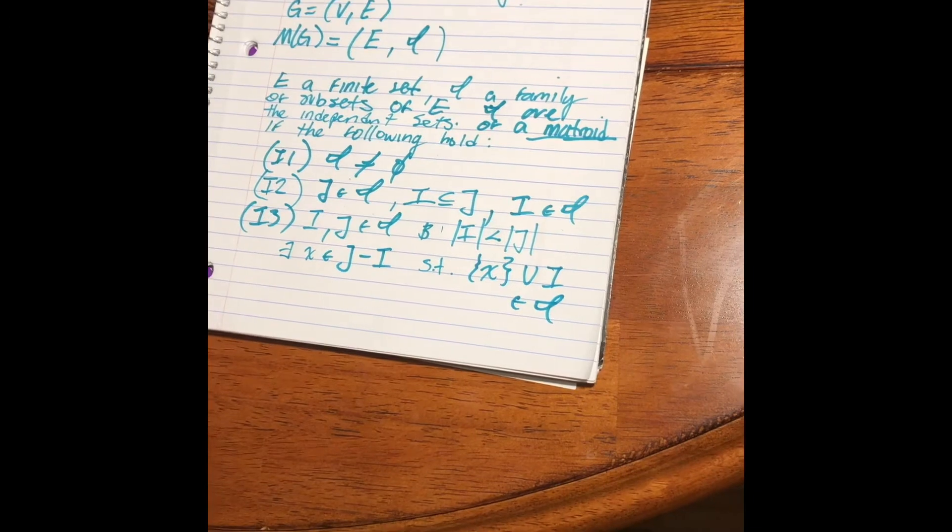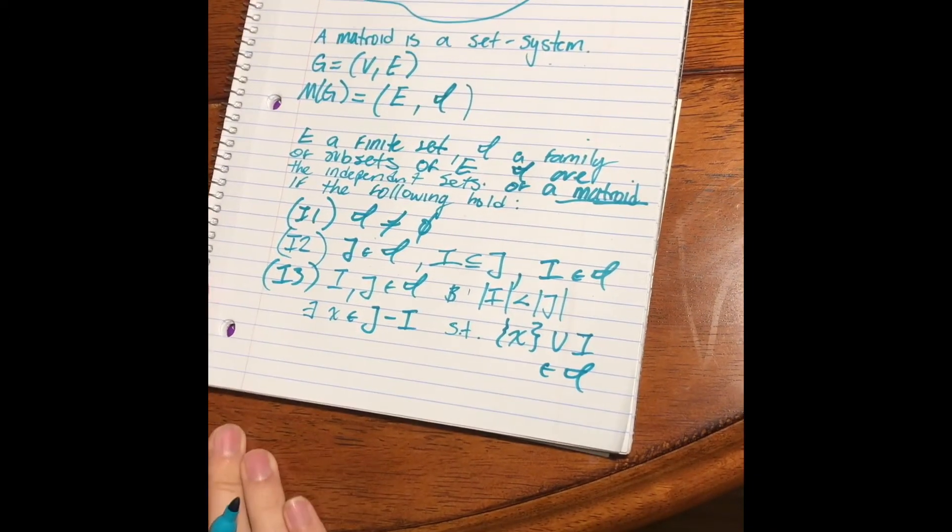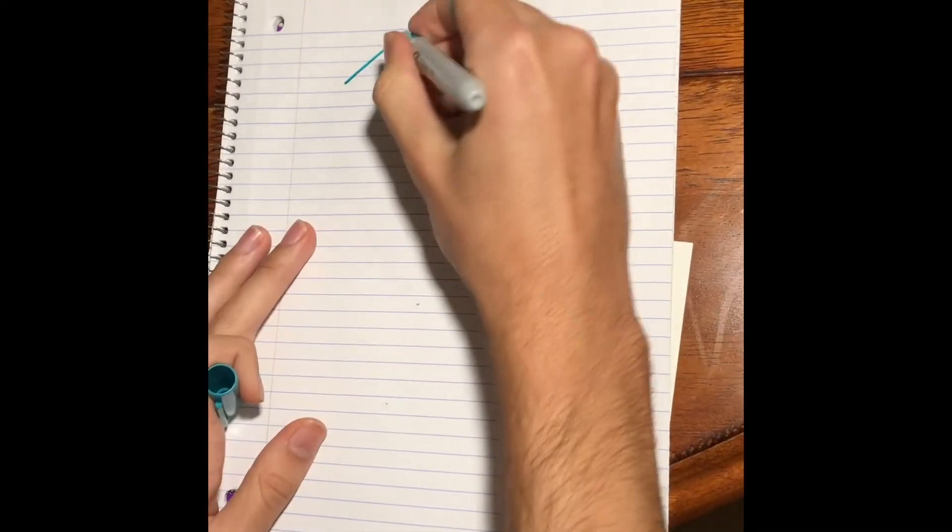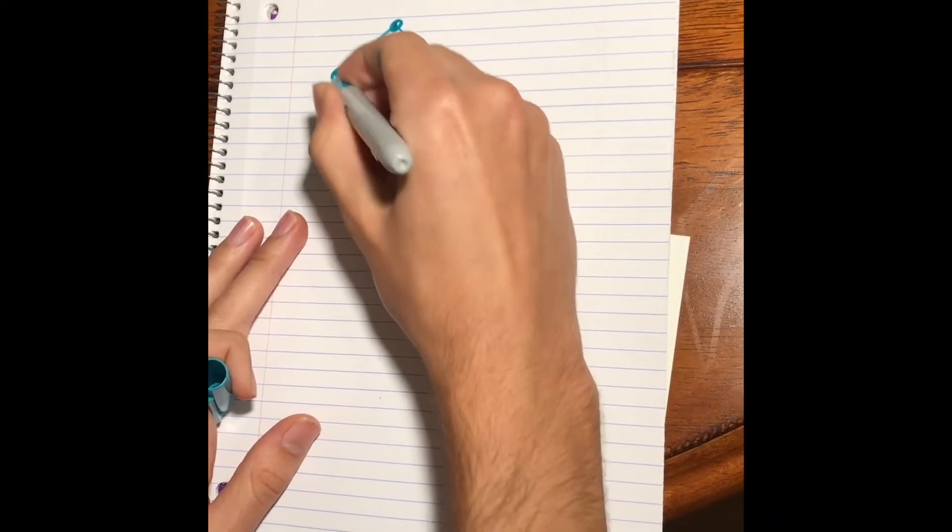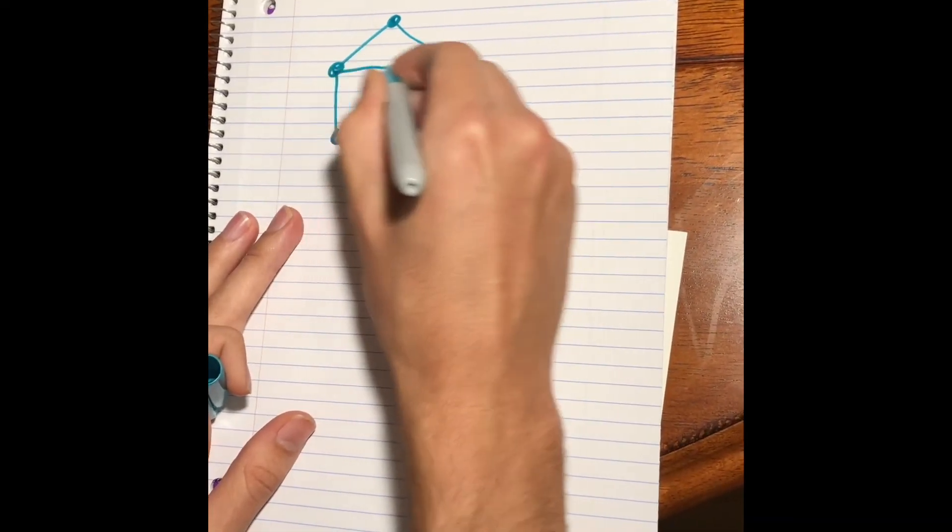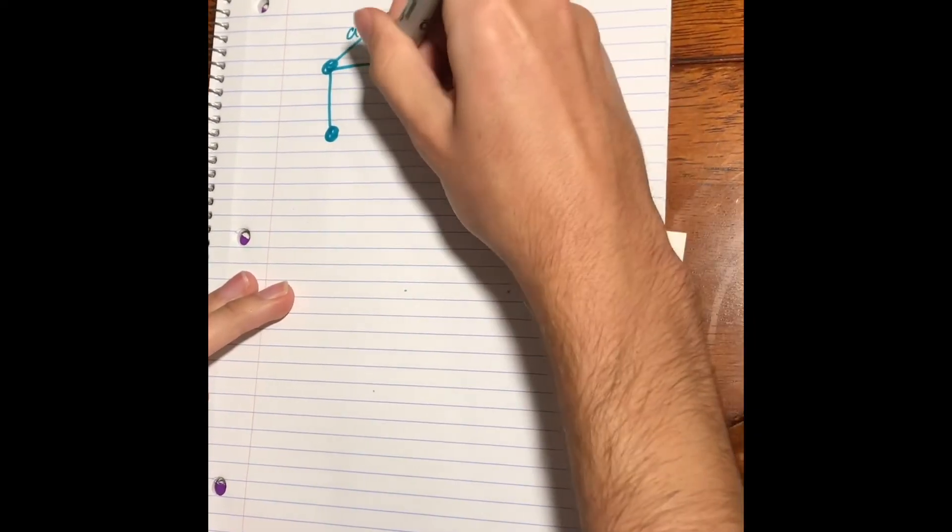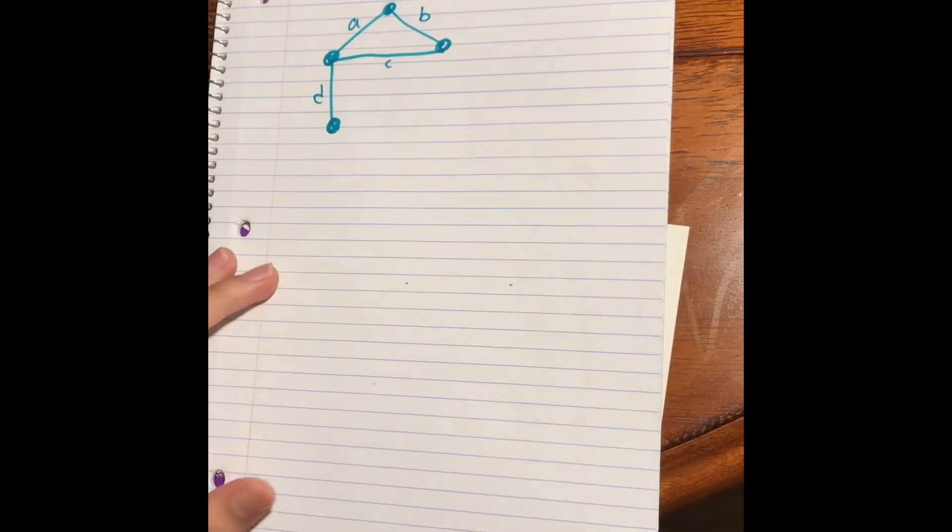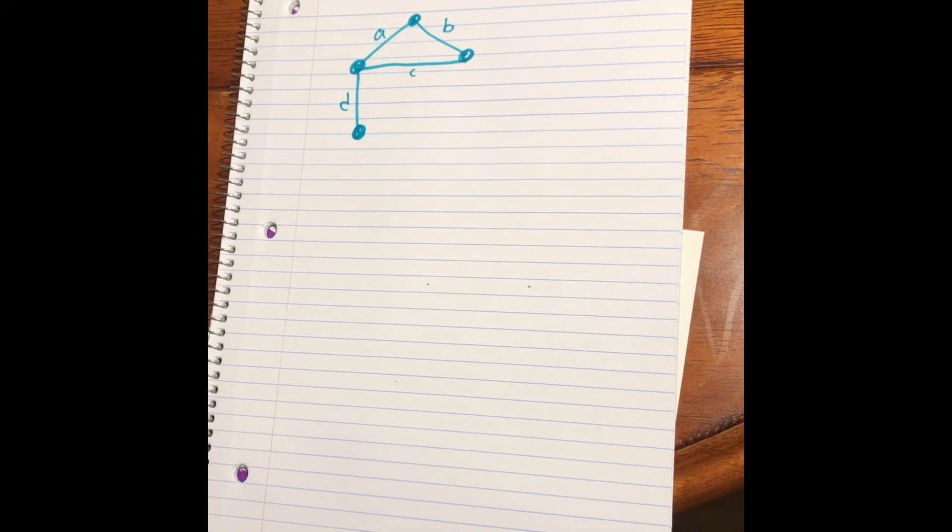So, let's give an example of how we would look at a graph as being a Matroid. Let's take this relatively simple graph here, the Big Dipper graph. And for Matroids, we're going to label the edges. And like I said earlier, Matroids are an abstraction of linear dependence.